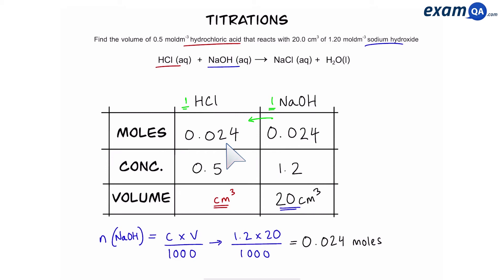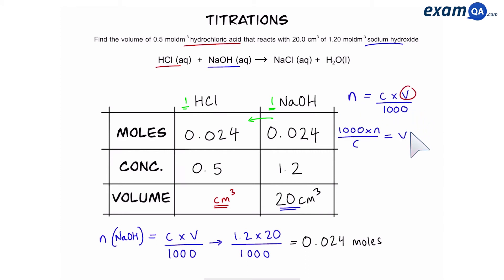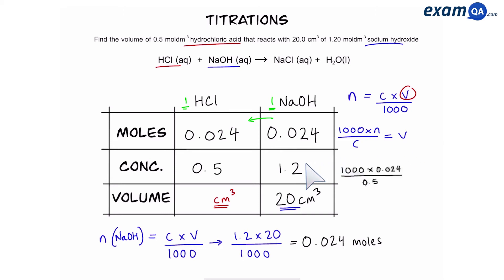Now that we know moles and concentration, we can work out the third value — volume. We're going to take our equation and rearrange it to make volume the subject. This gives us: 1000 times moles over concentration equals volume. All we have to do is plug in the values from the table. So, 1000 times 0.024 over 0.5 gives us a final answer of 48 — and that is the volume of hydrochloric acid.